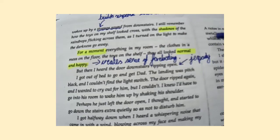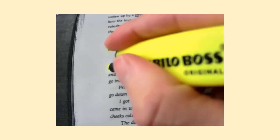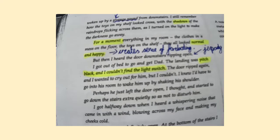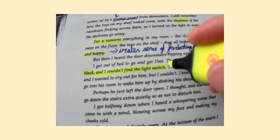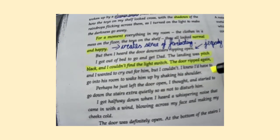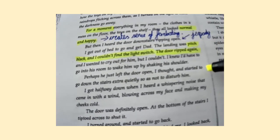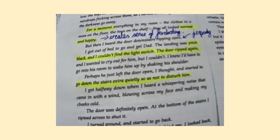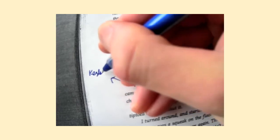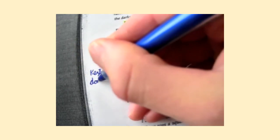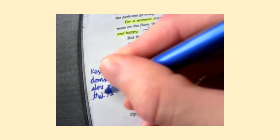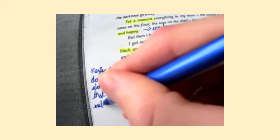'I got out of bed to go and get Dad. The landing was pitch black and I couldn't find the light switch.' That reminds me of a horror film where they're always set in the dark when something bad is about to happen, and they're fumbling for the light switch and can't find it. It creates a sense of foreboding, particularly because Kester isn't able to see what is there — he's in a vulnerable, exposed position. 'The door ripped again. And I wanted to cry out for him, but I couldn't.' The fact that Kester is going downstairs alone means he is vulnerable, and again contributes to that sense of foreboding building throughout this passage.